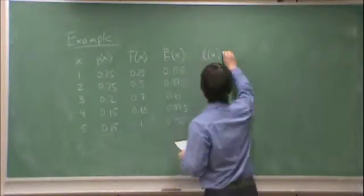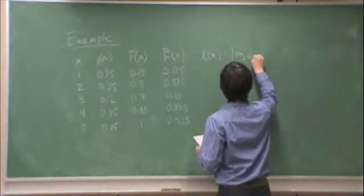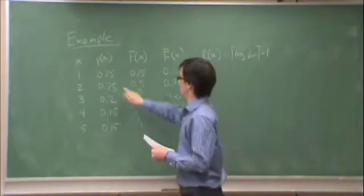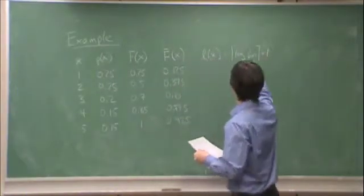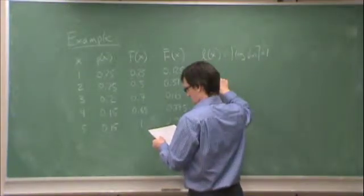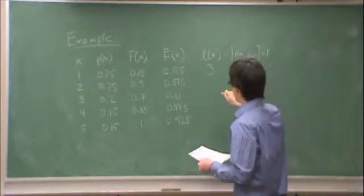For 0.25, remember the length is ceiling of log 1 over p(x), plus 1. For 0.25, log 1 over p(x) is 2, plus 1 is 3. Also 3 here.